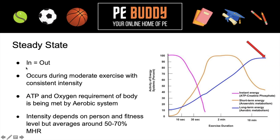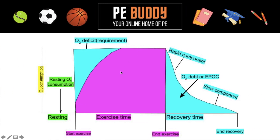Moving on to steady state — this simply means in equals out. This occurs during moderate exercise with consistent intensity. It means the ATP and oxygen requirement of the body for that particular exercise intensity is being met comfortably by the aerobic system. Intensity depends on the person and fitness level, but the average is around 50 to 70% of our maximum heart rate. On this graph, we can see the blue line starting to rise and plateau — this is where steady state is occurring, once the aerobic system has warmed up.